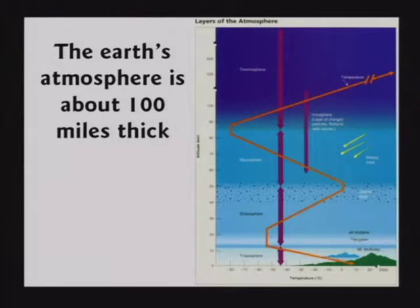Let me explain how carbon dating works. The Earth's atmosphere is about 100 miles thick. On this globe, it doesn't even show up — it's the thickness of the paint, basically. 100 miles is not much. The space shuttle whizzes around just above the atmosphere so it cuts down on drag and gets no friction up there.